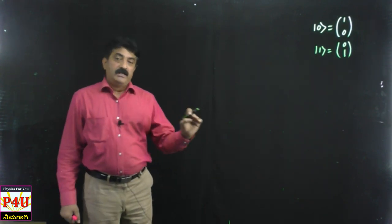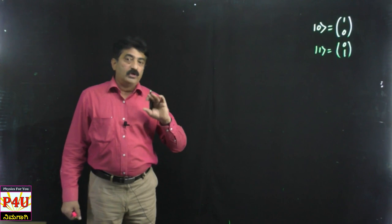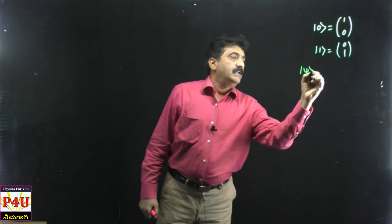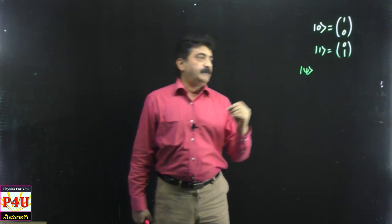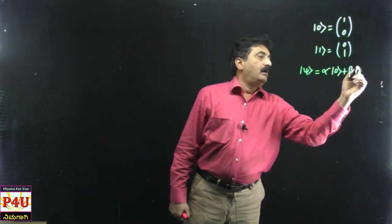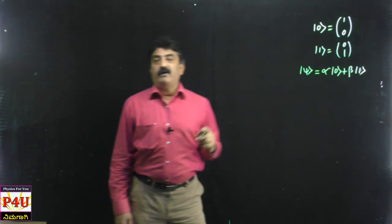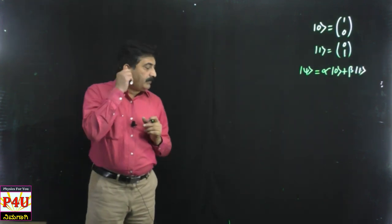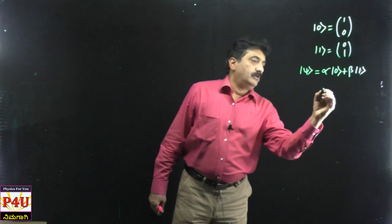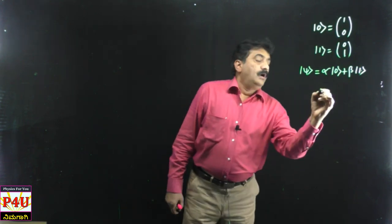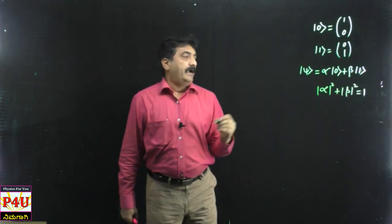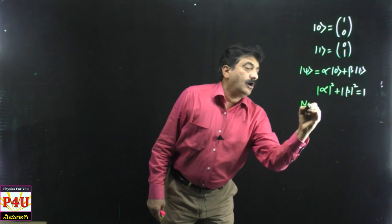Now let us proceed further. I already mentioned that 0 and 1 are not only distinct — they can even be in the superposed state. How to represent it? It is nothing but ket psi, equal to alpha into ket 0 plus beta into ket 1, where alpha and beta are probability amplitudes, and modulus of alpha squared plus modulus of beta squared is always equal to 1. This is normalization.